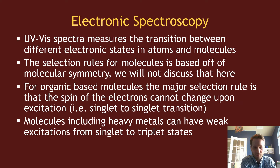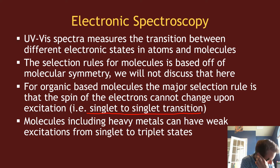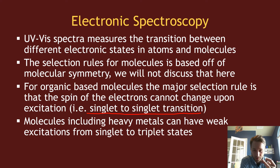The main selection rule we'll focus on is that, especially for organic-based molecules, your electronic state cannot change the spin of your molecule. So if you're in a singlet state, you transition to a singlet state. This can be different for metallic systems or heavy metal systems, where this is potentially more allowed, but we won't focus on that here. We'll talk about organic molecules: your spin multiplicity does not change with absorption or emission of light.